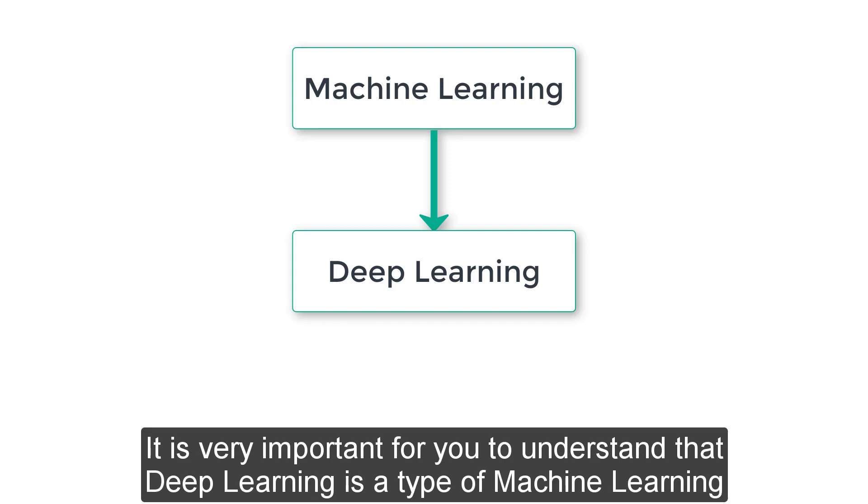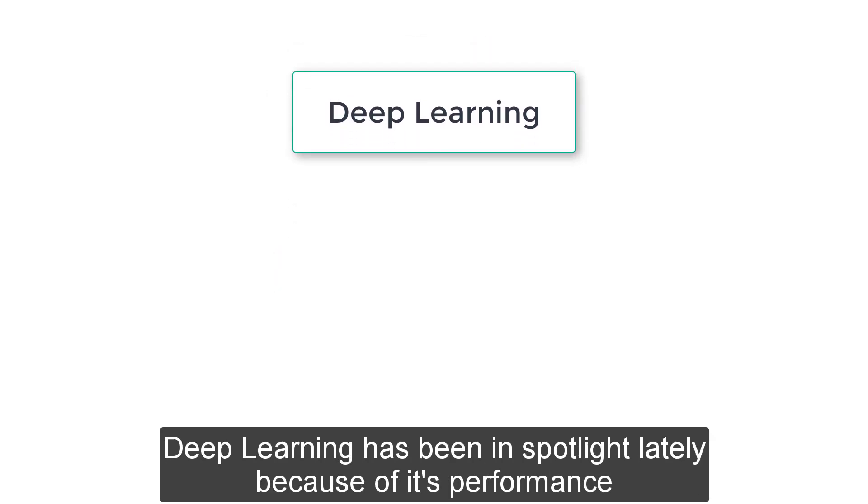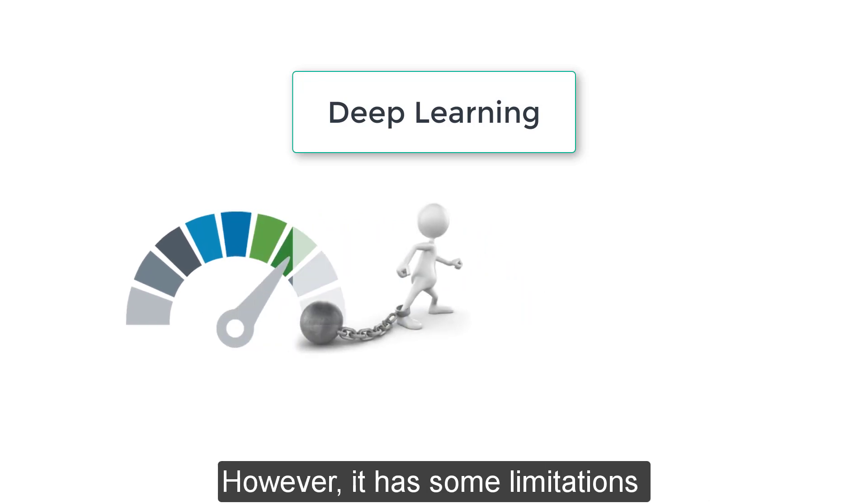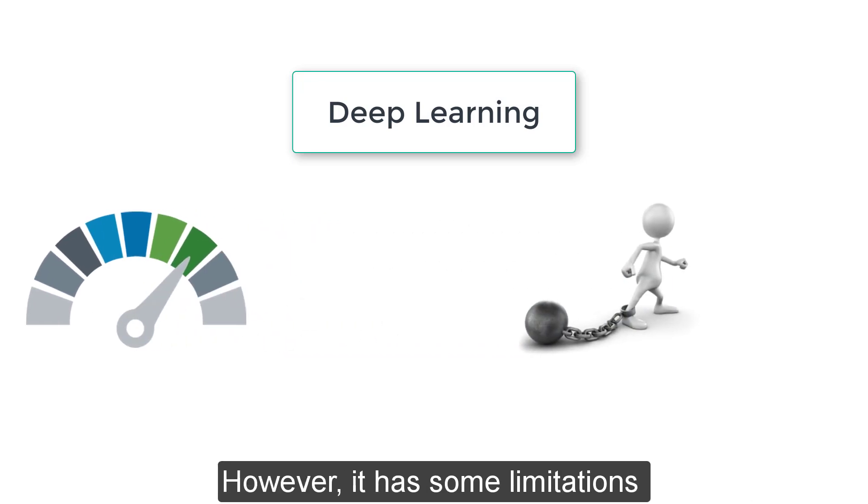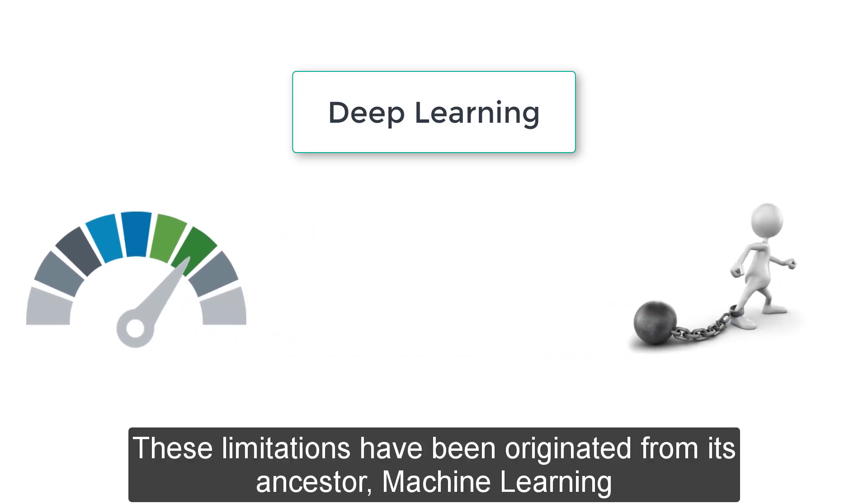It is very important for you to understand that deep learning is a type of machine learning. Deep learning has been in its spotlight lately because of its performance. However, it has some limitations. These limitations have been originated from its ancestor, machine learning.